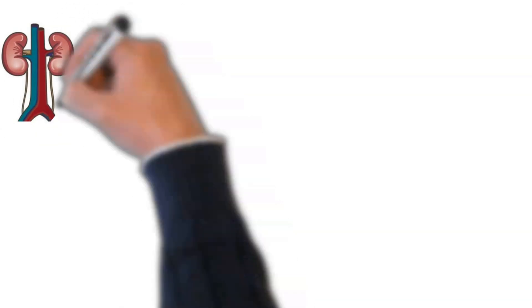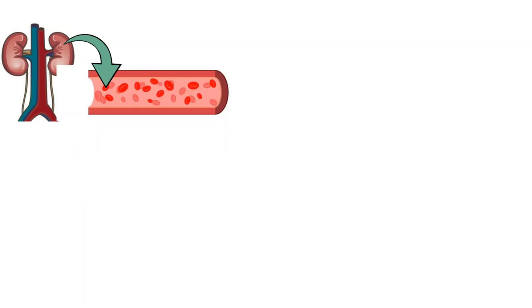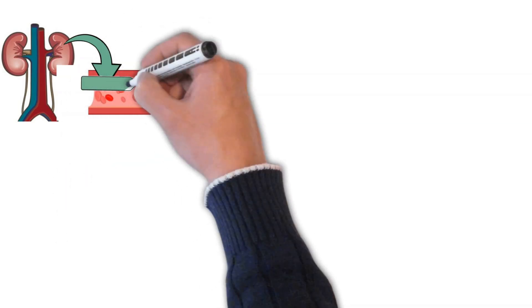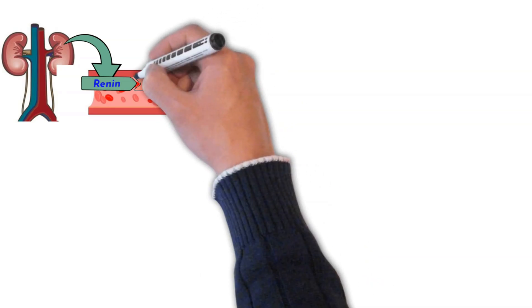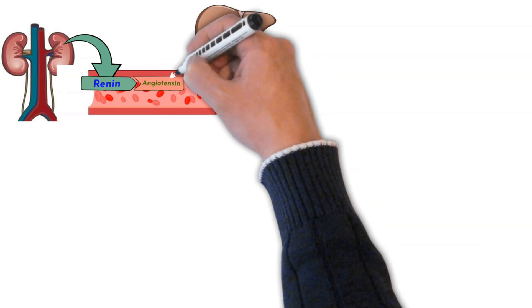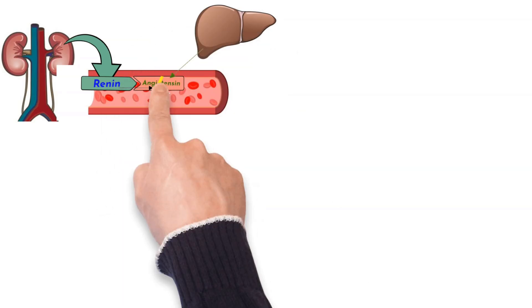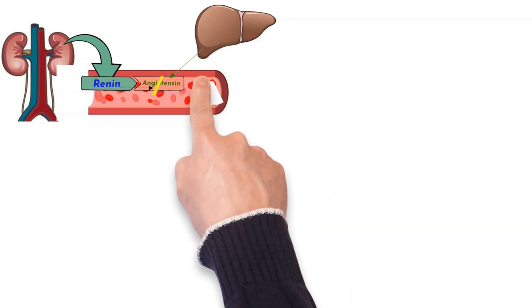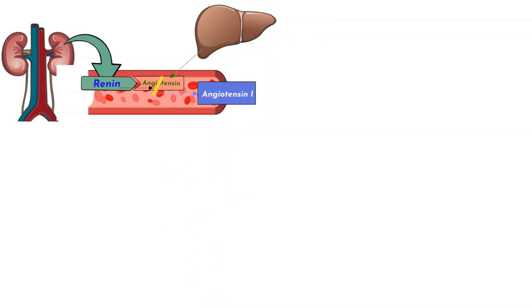Once renin has been released into the blood, it can act on its target, angiotensinogen. Angiotensinogen is a protein produced in the liver and is found continuously circulating in the plasma. Renin then acts to cleave angiotensinogen into angiotensin-1. Angiotensin-1 is physiologically inactive and does nothing on its own; however, it acts as a precursor for angiotensin-2.